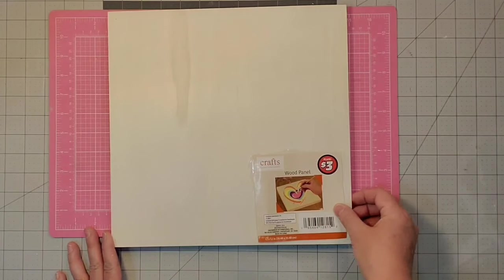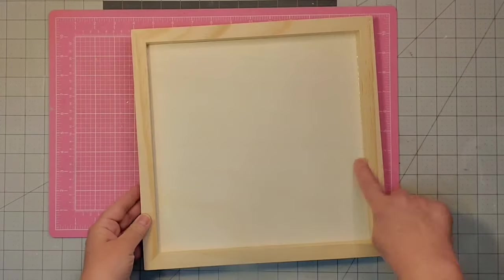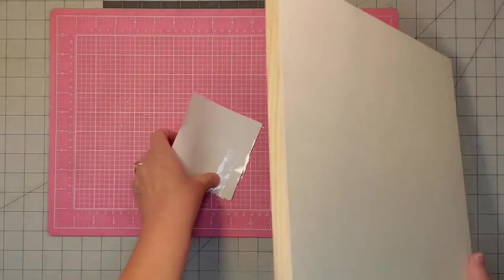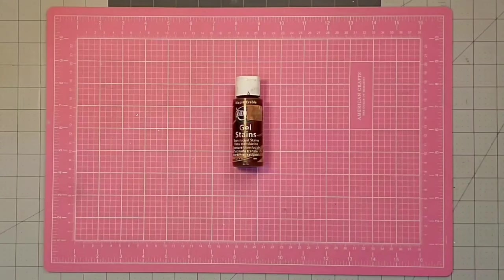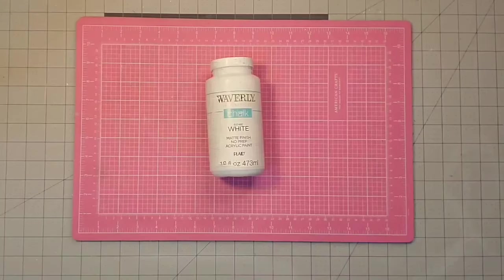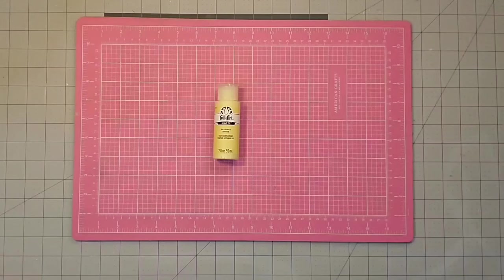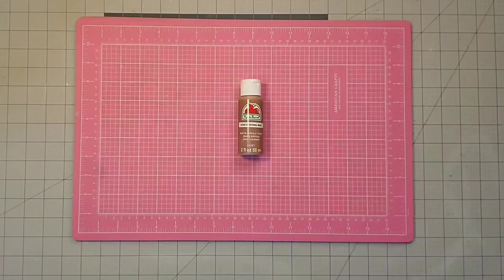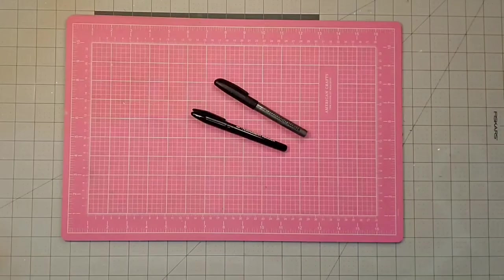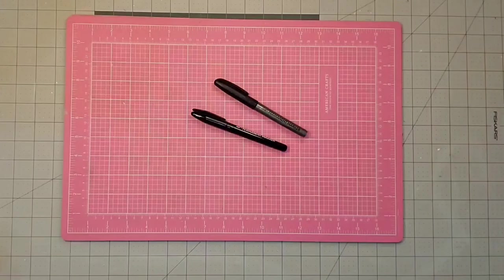For this project, I'm going to be using one of these 12x12 wood panels that I got at the Dollar Tree for $3. It's really good quality and ready to paint on. I'm going to use some gel stain I got at Hobby Lobby when it was on sale, some Waverly white chalk paint, acrylic paint in Lemonade and Territorial Beige. I'm going to use my Jot permanent markers in two different widths from the Dollar Tree.